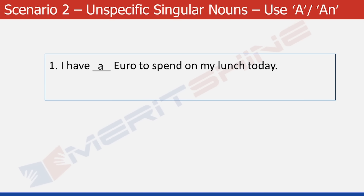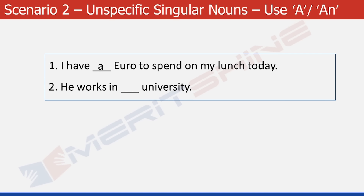It is not the vowel or consonant but their sound that matters in deciding which article is correct. Here, U sounds like 'yoo'. Now try this one: He works in dash University. It's again A. The sound of U is again 'yoo'.